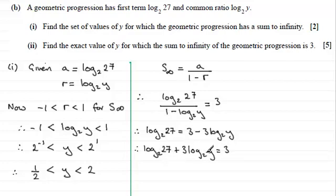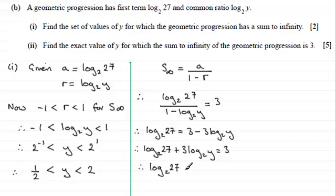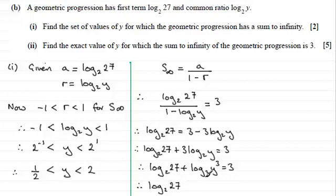To simplify, we need to reduce this to one log term. Using the power rule, 3 log base 2 of y is the same as log base 2 of y cubed. Then we group the two log terms using the addition rule: log base 2 of 27 plus log base 2 of y cubed equals log base 2 of 27 multiplied by y cubed, and this equals 3.